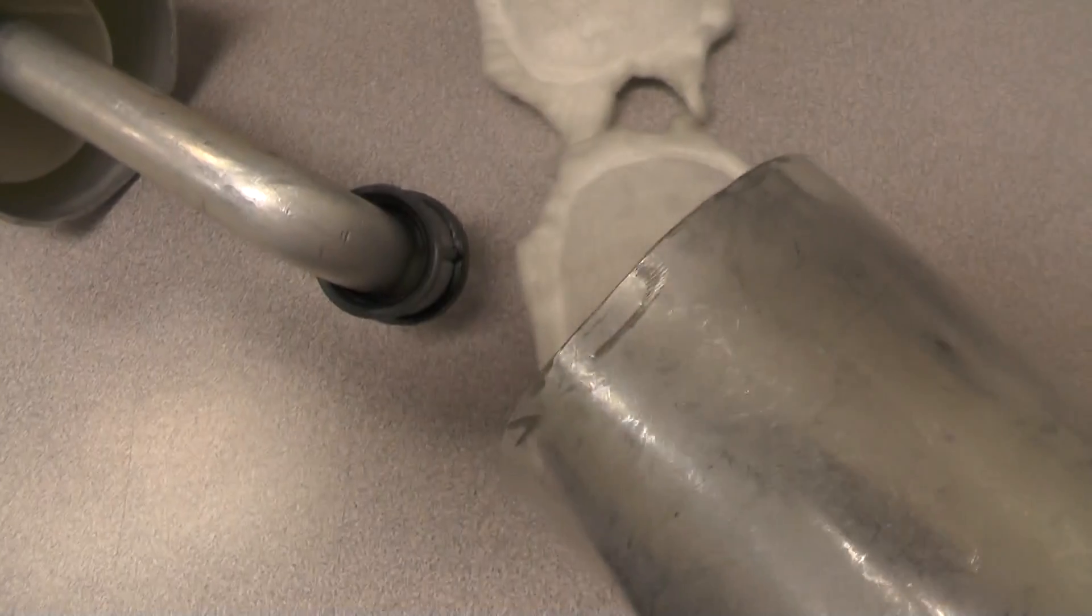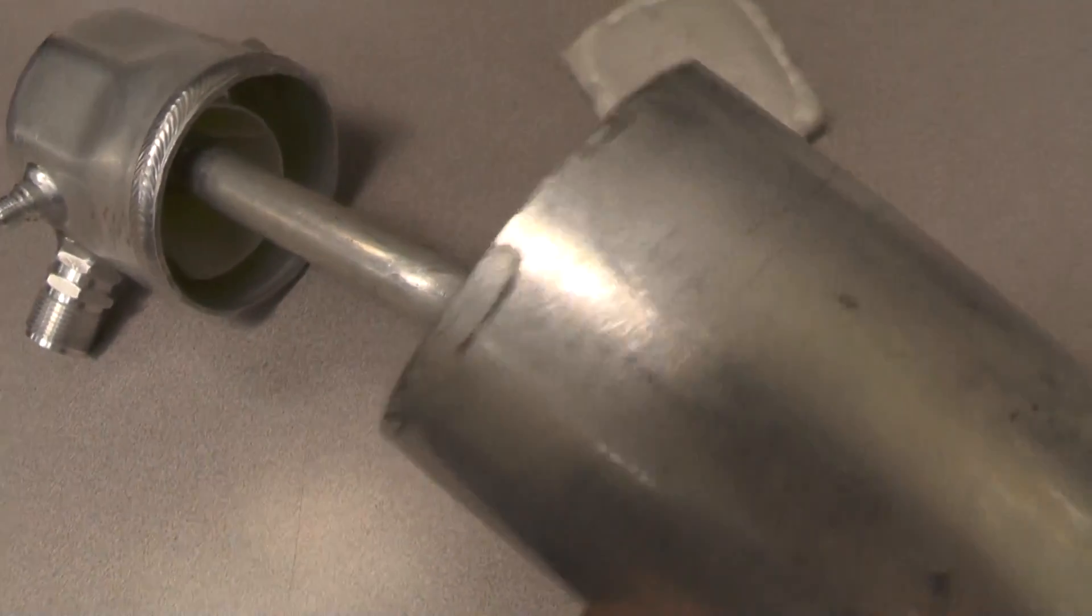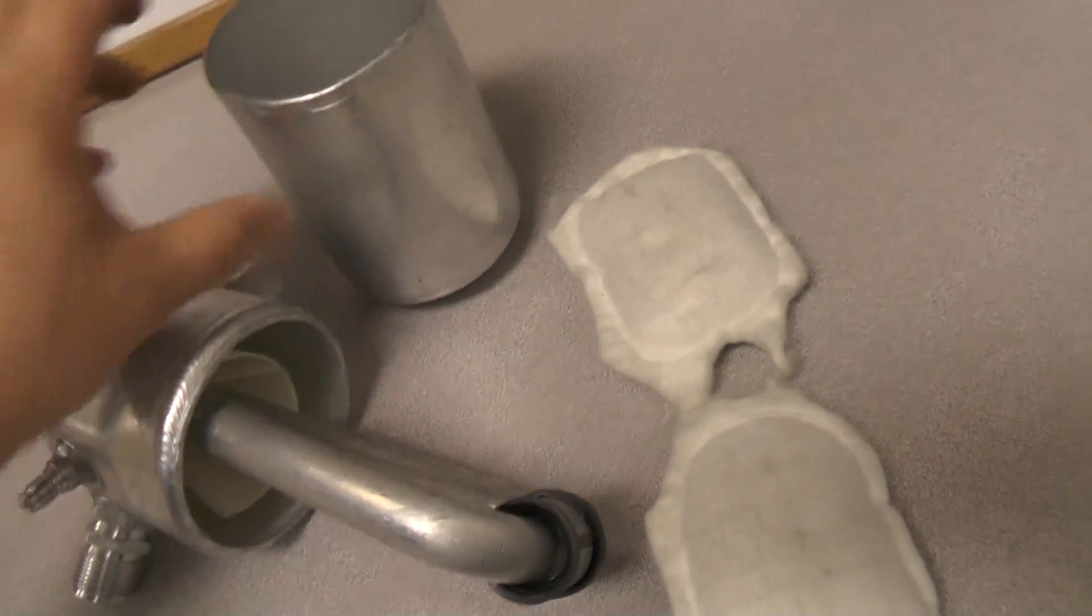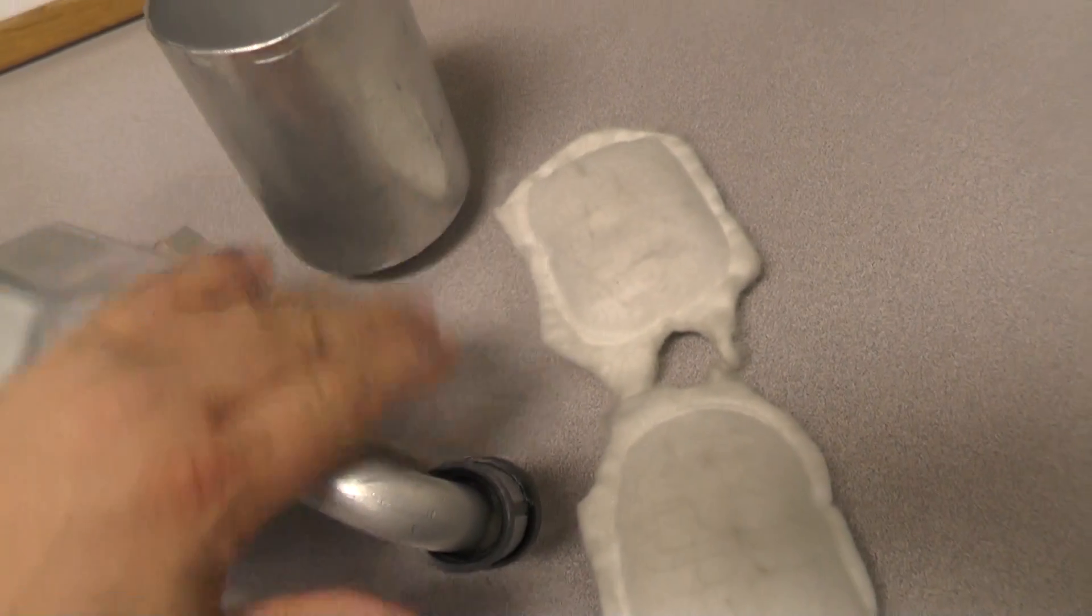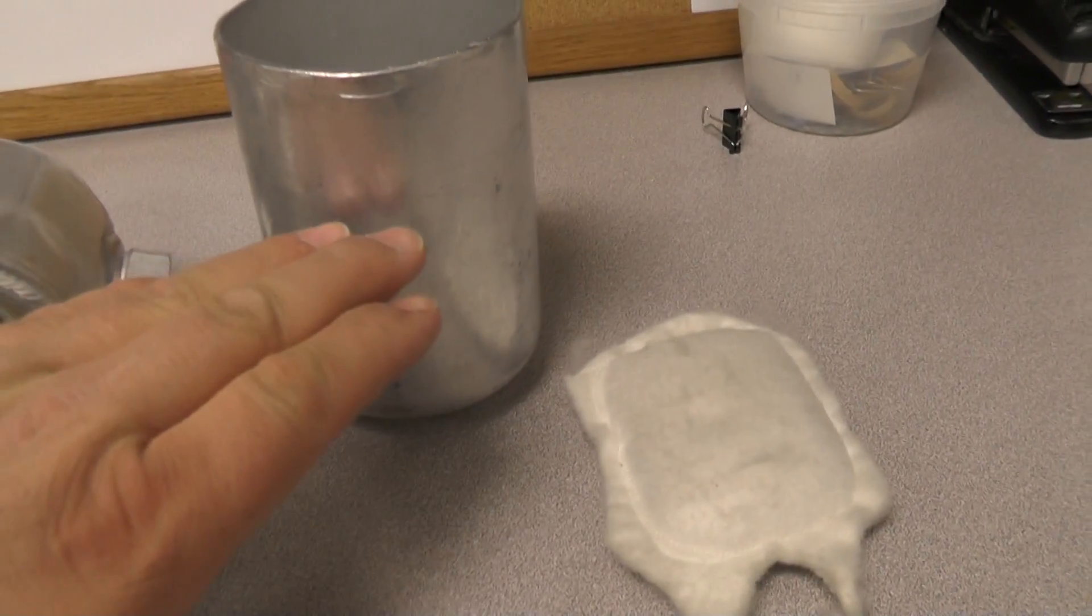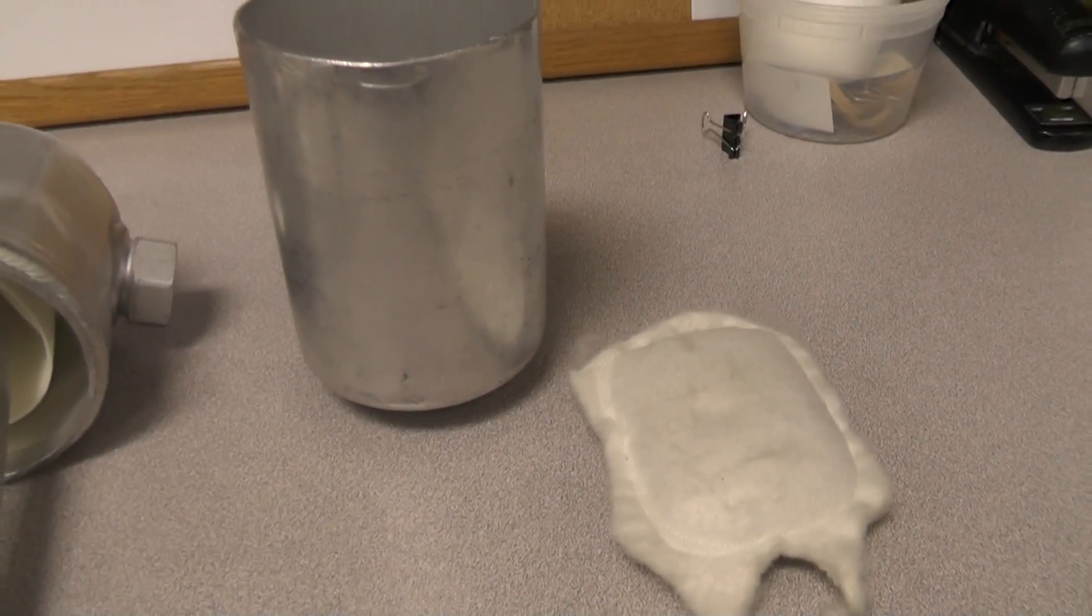And then inside there is the desiccant. So then this will eventually fill up about halfway, maybe about that far up. Fill up about to there with refrigerant and oil mixed together.